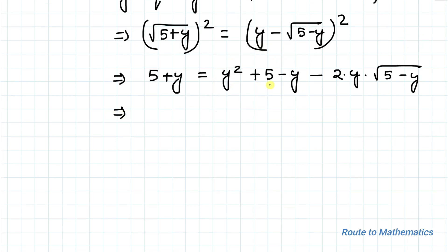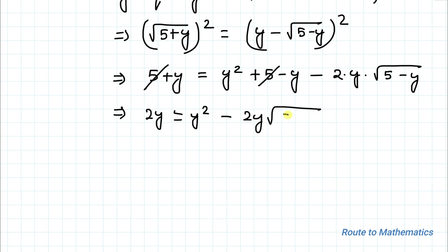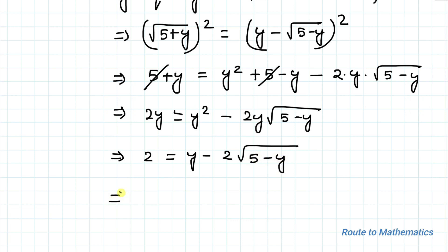We have 5 + y = y² + 5 - y - 2y·√(5 - y). Here we have positive 5 on both sides, so the 5s cancel out. This gives us 2y = y² - 2y·√(5 - y).